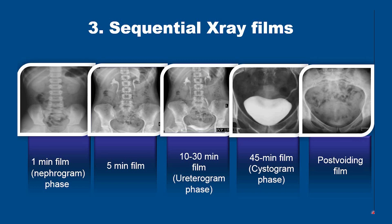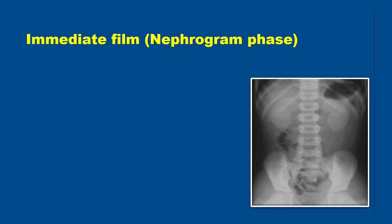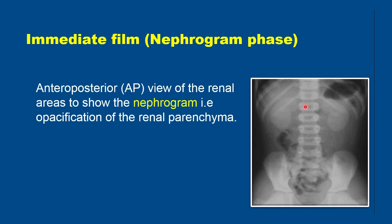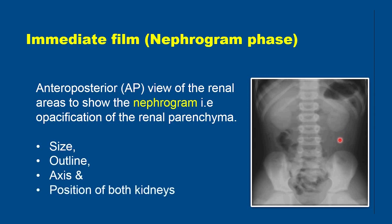The immediate film or nephrogram phase is an anteroposterior view of the renal areas to show the nephrogram, that is opacification of the renal parenchyma. In this film we should look for the size, outline, axis, and position of both kidneys. As you can see in this film, there is faint opacification of both kidneys.